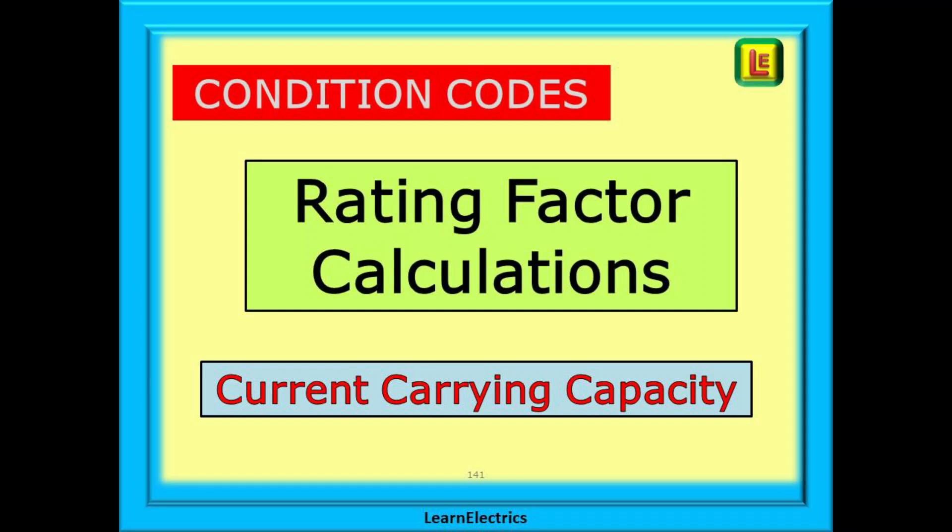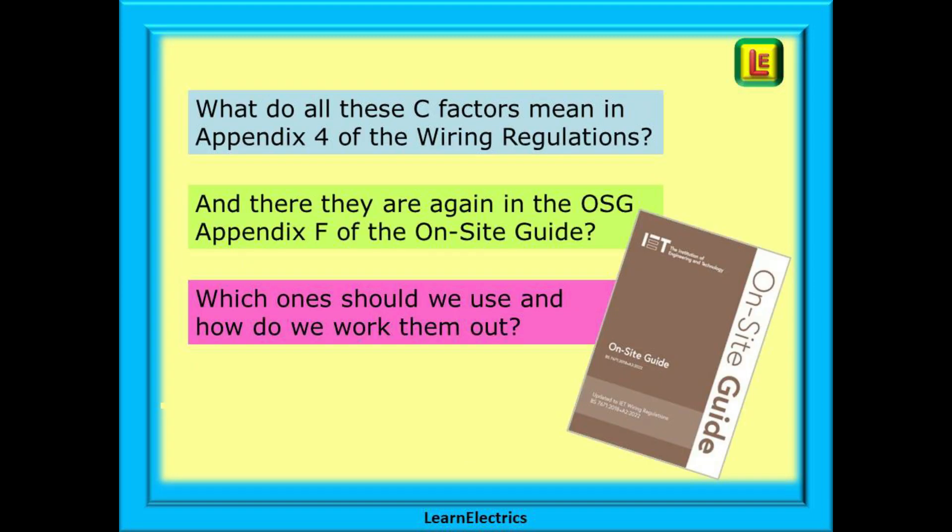This video from LearnElectrics will look at some recent questions about the rating factors for electrical cables if we are given certain conditions of installation. We ask ourselves what all these C factors mean in Appendix 4 of the wiring regulations. There are some big equations here, where do we even start? And there they are again in the on-site guide, so which ones should we use, what are they for and how do we work them out?